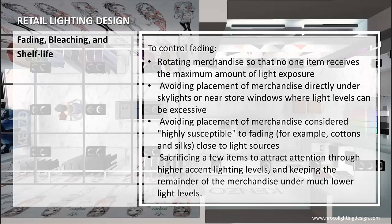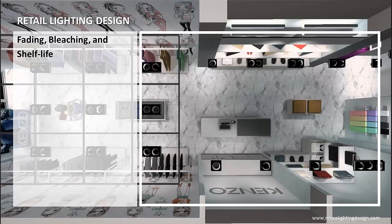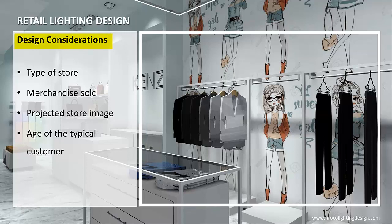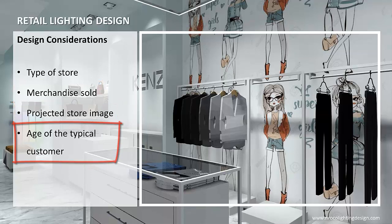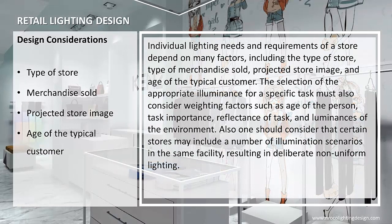Individual lighting needs and requirements of a store depend on many factors including the type of store, type of merchandise sold, projected store image, and age of the typical customer. The selection of the appropriate illuminance for a specific task must also consider weighing factors such as age of the person, task importance, reflectance of task, and luminances of the environment. One should also consider that certain stores may include a number of illumination scenarios in the same facility, resulting in deliberate non-uniform lighting. This is now the end of this presentation. Thank you very much for listening.